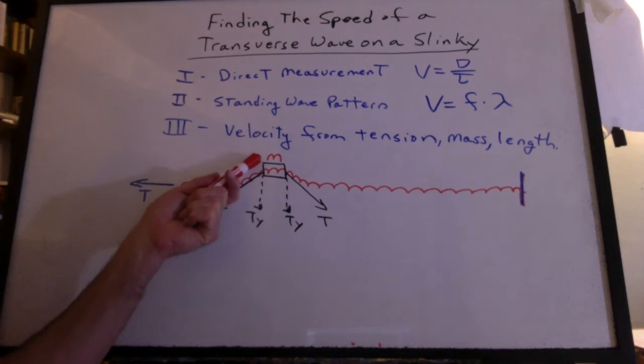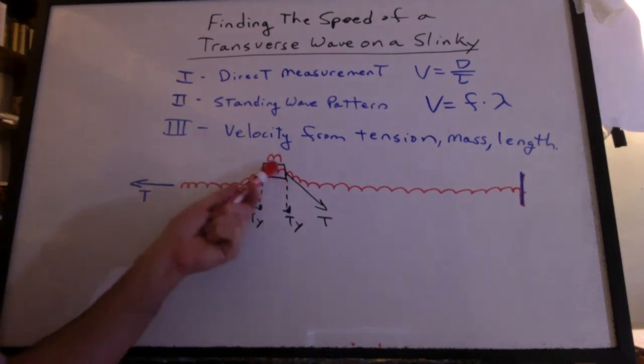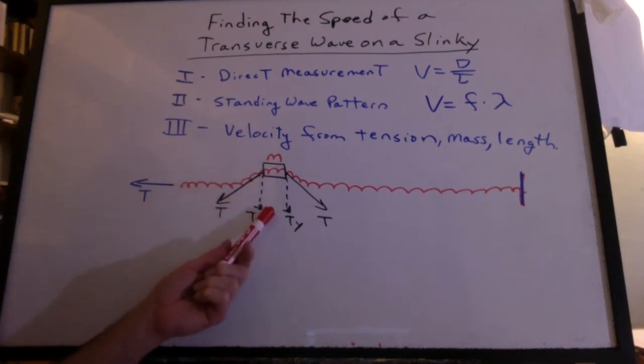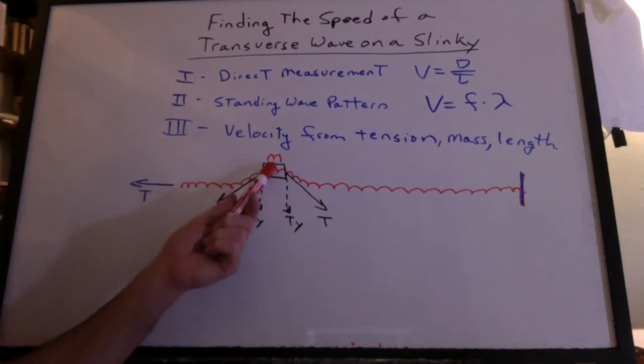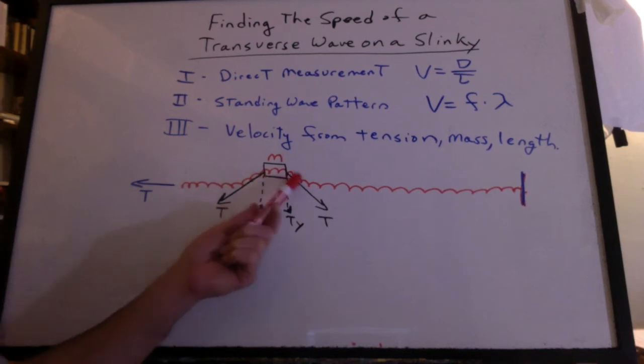Now consider the effect of the mass. The mass of this little portion is going to have inertia. It's going to resist this change in motion. So the bigger the mass, the harder it is for it to move, the slower the wave ought to go.